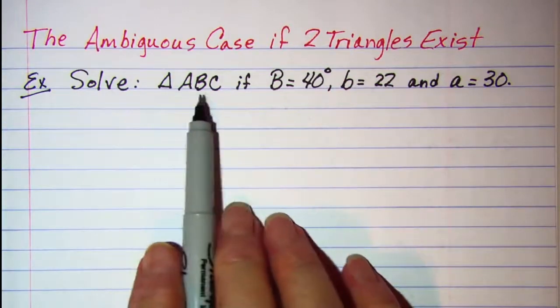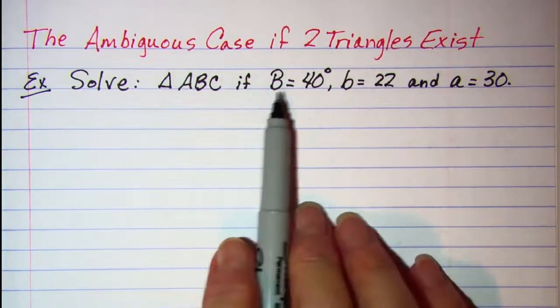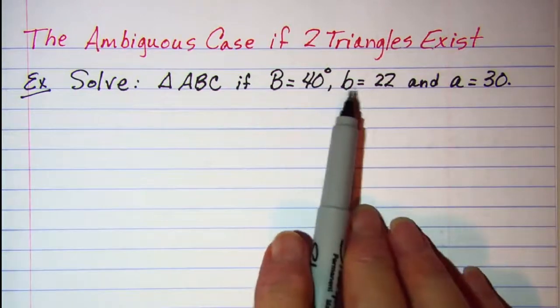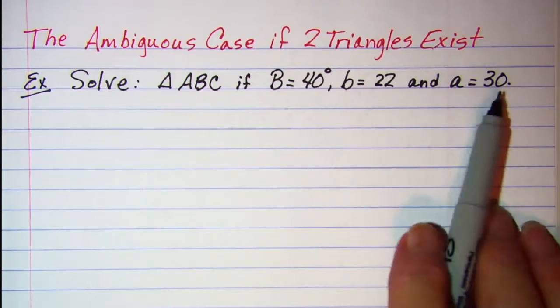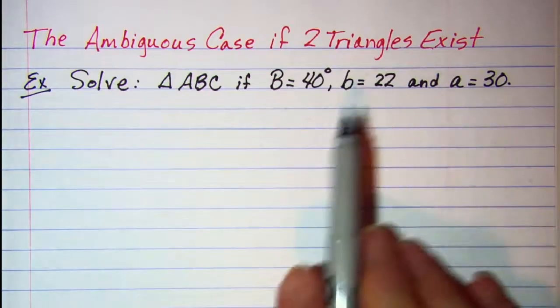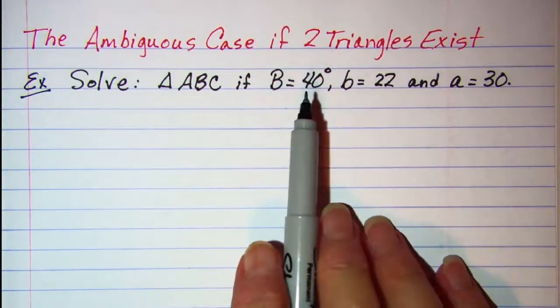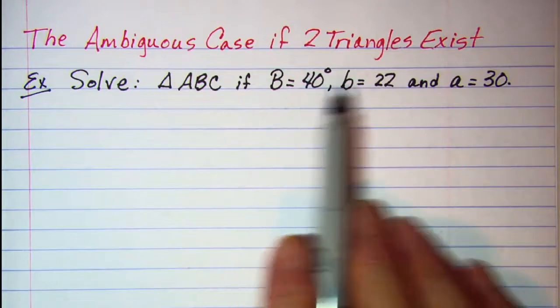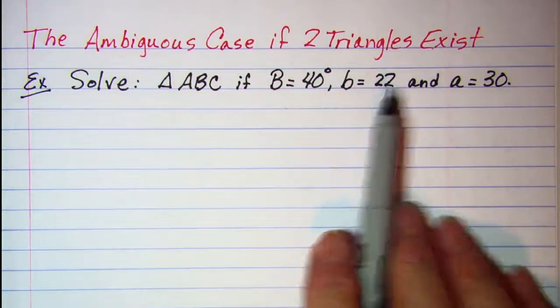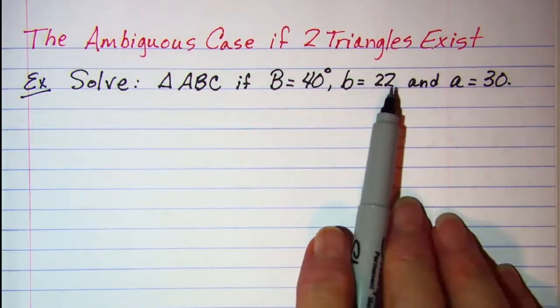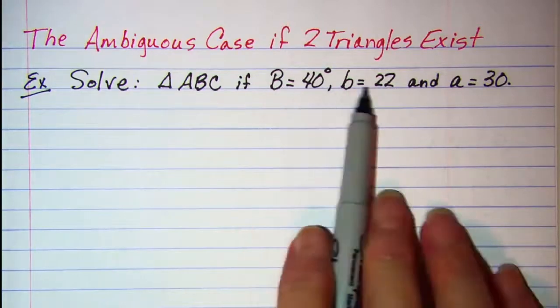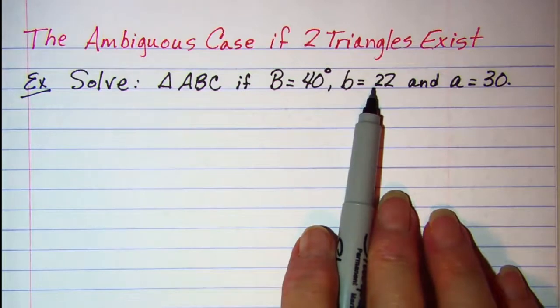We're asked to solve triangle ABC if angle B is 40 degrees, side B is 22, and side A is 30. Now we know we have an ambiguous case if we're given one angle and then two sides, and the angle is opposite one of those sides. So we see that's the case we're going to be working with.